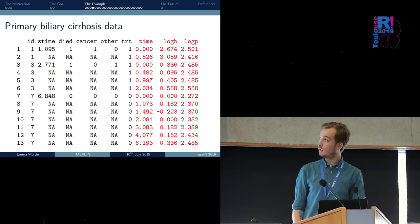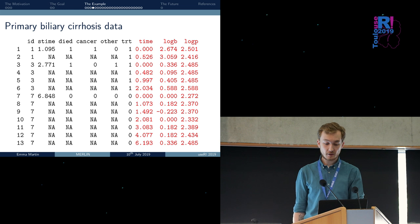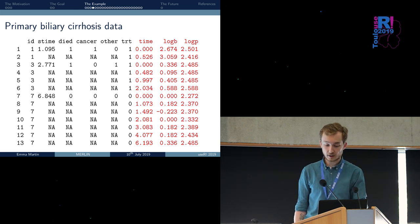This is the longitudinal data that we have. We have the time at which each measurement was taken, and then we have the value of serum bilirubin and the value of prothrombin index on the log scale.